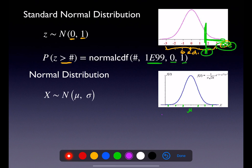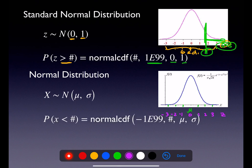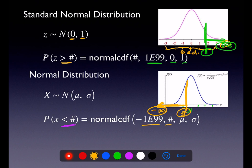If you think about this in terms of z-scores: negative 3, negative 2, negative 1, 0, 1, 2, 3 — that's always the case when you relabel with z-scores. To calculate a probability such as P(X < some number), my low is negative infinity and my high is that number. Put the mean and standard deviation in the last two positions. Whether on the standard normal or regular normal curve, always use normalCDF — never normalPDF, always normalCDF.